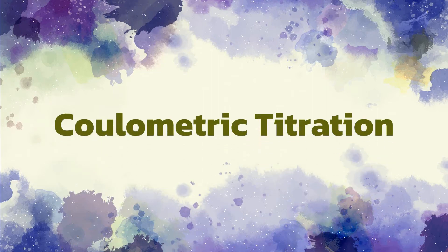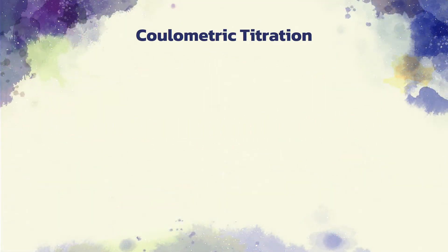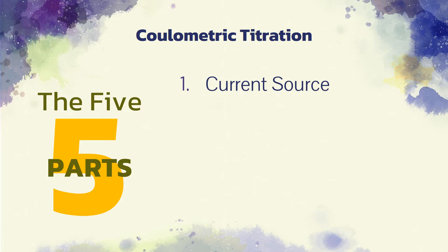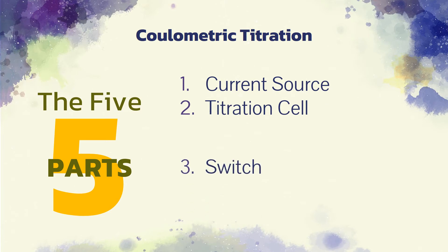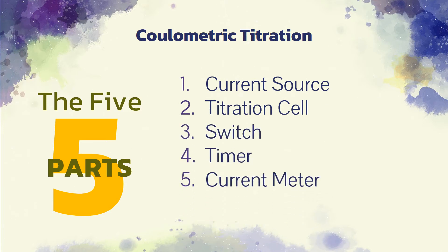Now, let's go over to controlled current coulometry, or coulometric titration. The equipment required for a coulometric titration includes a source of constant current from 1 to several hundred milliamperes, a titration cell, a switch, a timer, and a device for monitoring current.